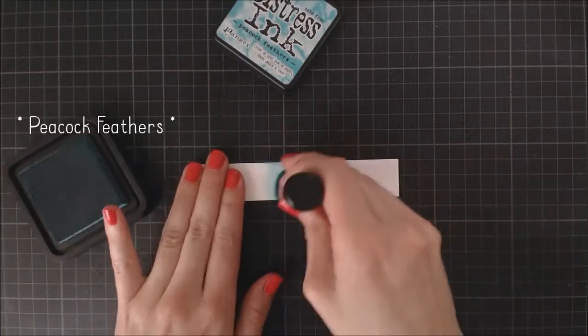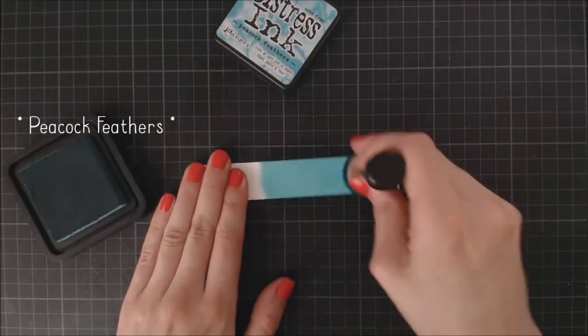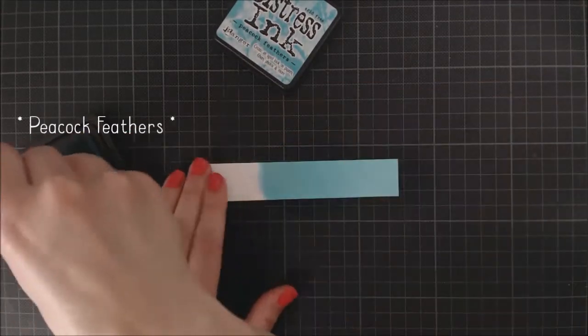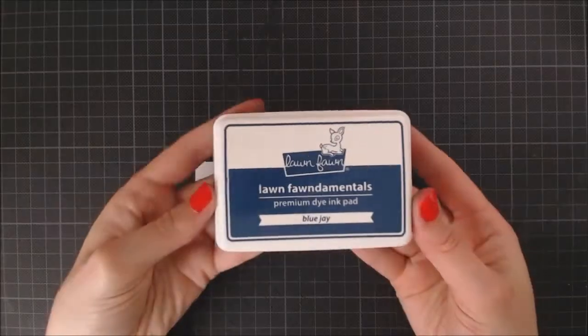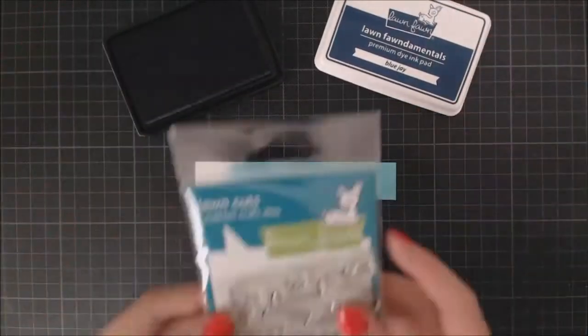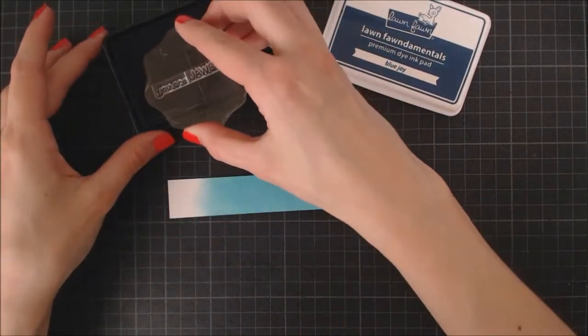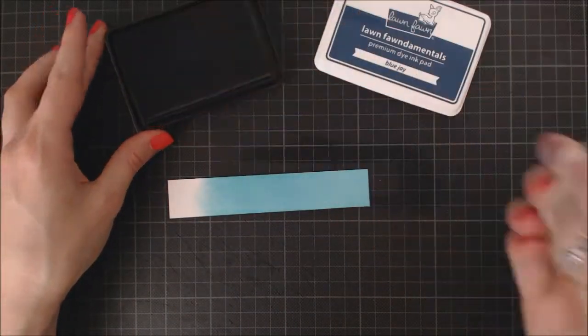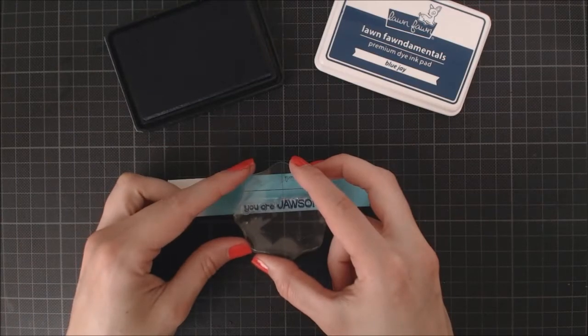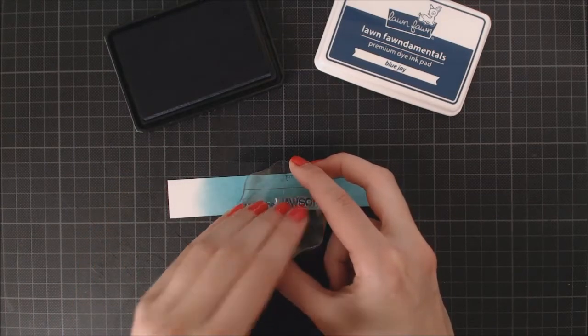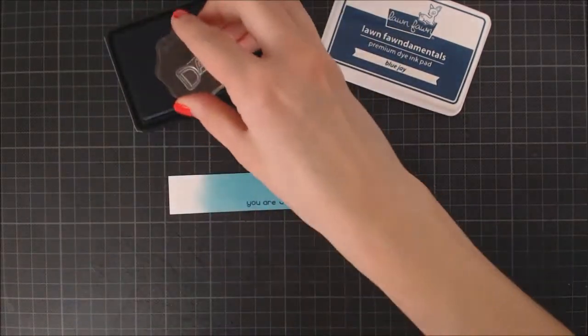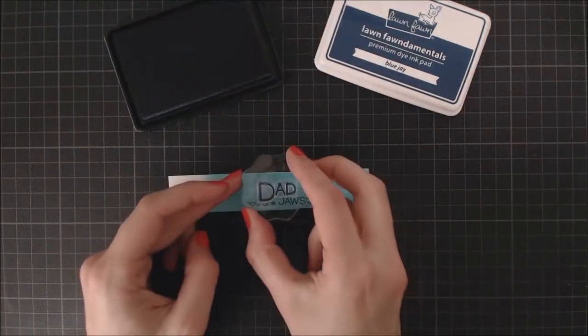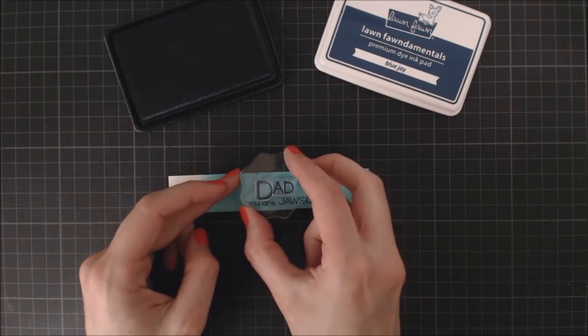I'm going to be placing the sentiment on a strip of cardstock. To match the colors in the card, I'm going to take again my blending tool and apply some Peacock Feathers Distress Ink on my strip. And then I'm going to stamp my sentiment using Blue Jay Ink on it. I'm creating my sentiment combining the You're Awesome words from the stamp set with the Word Dad from the Dad Plus Me stamp set.